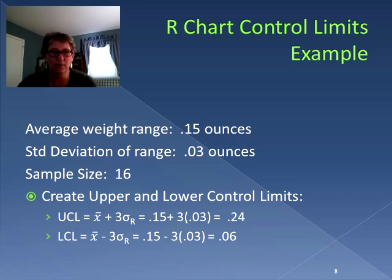So again, imagine the control chart. The lower line is 0.06, the upper line is 0.24. As long as when we calculate the ranges of our samples, those data points fall between 0.06 and 0.24, we say our process is doing fine.